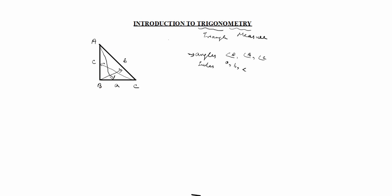In this: obtuse, acute, and right angle. Right angle is 90 degrees. Acute is less than 90 degrees. Obtuse is greater than 90 degrees. You see: 'A' is a small alphabet, so that is less. 'O' is the biggest — in the alphabet, A, B, C, D... O comes last. So A is lesser and O is greater, meaning obtuse is greater than 90 degrees. Remember it this way.